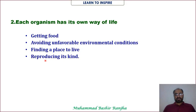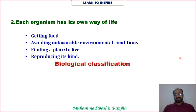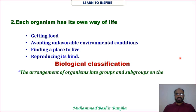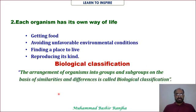In some organisms sexual reproduction is found. The definition of biological classification is: the arrangement of organisms into groups and subgroups on the basis of similarities and differences is called biological classification. So classifying organisms into groups and subgroups based on similarities and differences is biological classification.